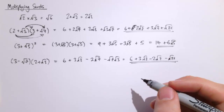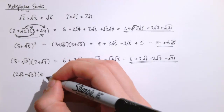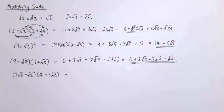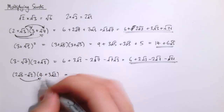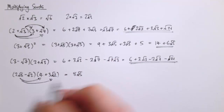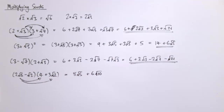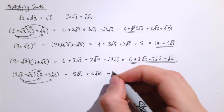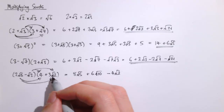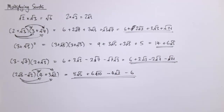For a harder example: 2 root 5 minus root 2 times 4 plus 3 root 2. Don't be put off — follow exactly the same method and think carefully about each term. 2 root 5 times 4 gives 8 root 5. Then 2 root 5 times 3 root 2: that's 6 times root 10. Then minus root 2 times 4 is minus 4 root 2. Finally, minus root 2 times 3 root 2 is minus 3 times 2, which is minus 6. None of the remaining terms simplify down further.